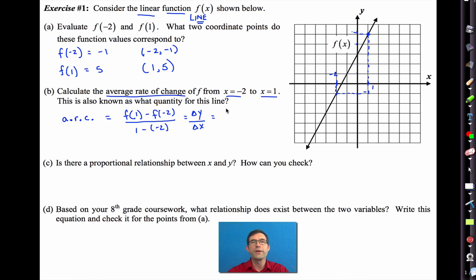We know that f of one is five and we know that f of negative two is negative one. So we have five minus negative one divided by one minus negative two. Five minus negative one is positive six. One minus negative two is positive three. And that gives us an answer of two. And what is that known as? That's known as the slope of the line.